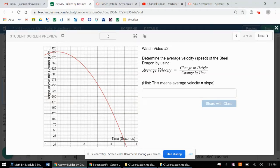This is the second video for the 7-2b lesson. We're now going to find the average speed from time zero to time five for the steel dragon.